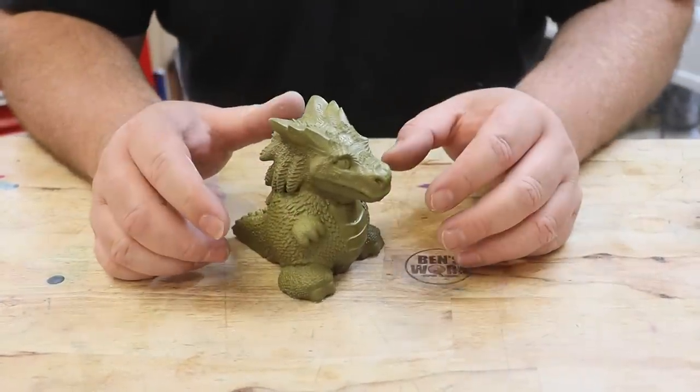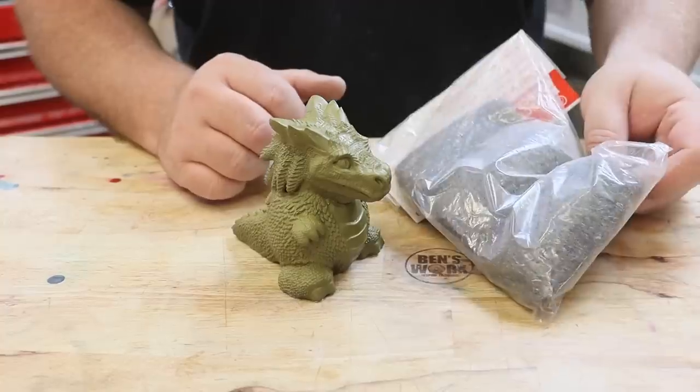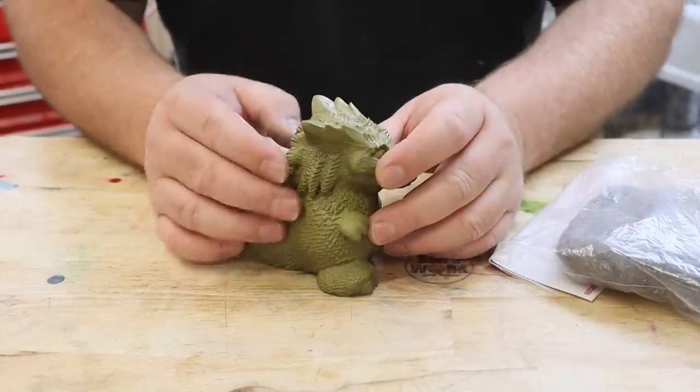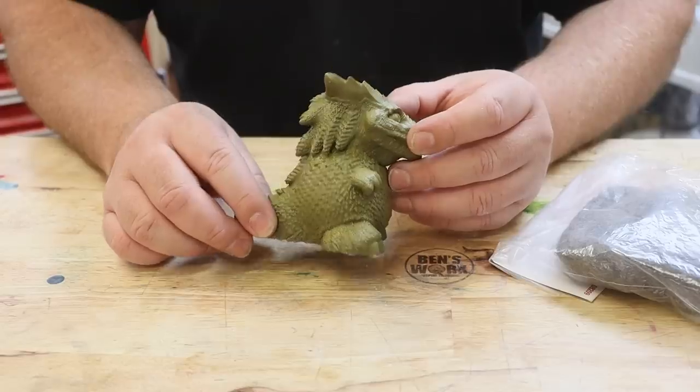So I've now moved back into the workshop for this part. I've got myself some steel wool - I've got some fine, medium, and coarse, so I'll start off with the fine one. I'm just going to give it a bit of a rub and see if we can create a shine.